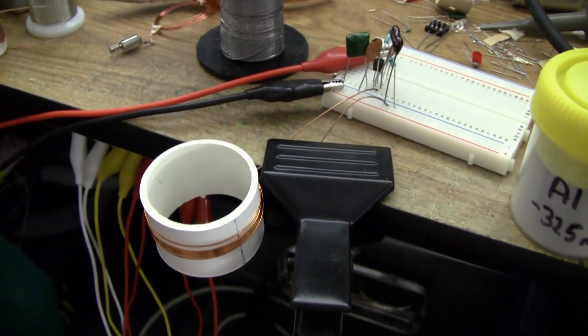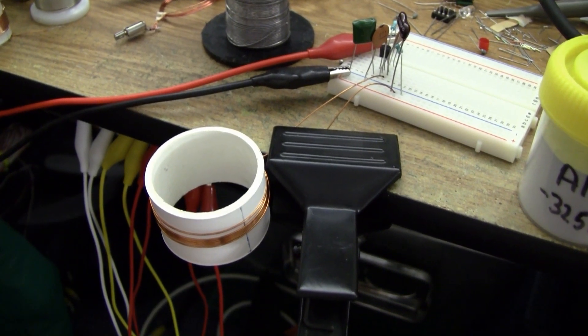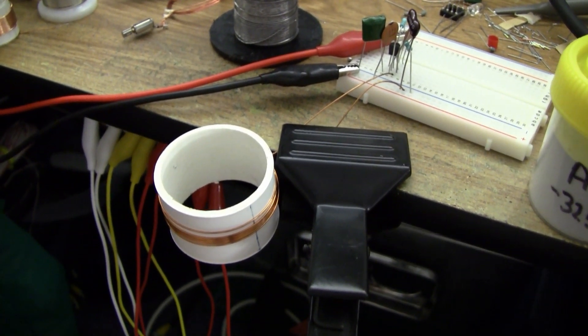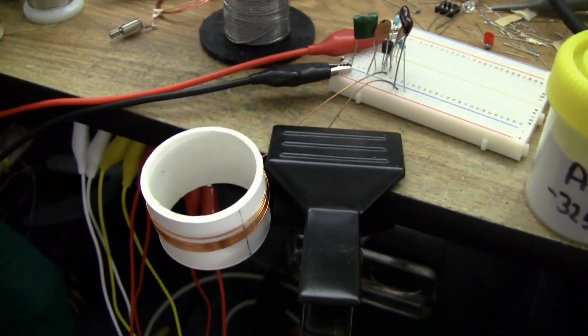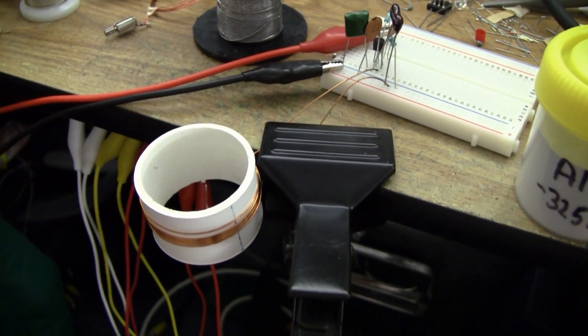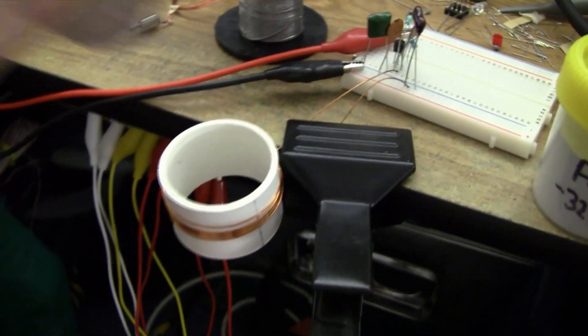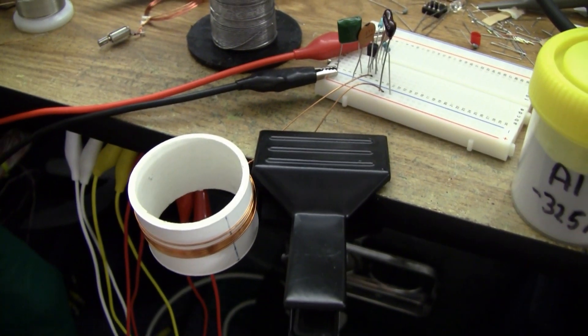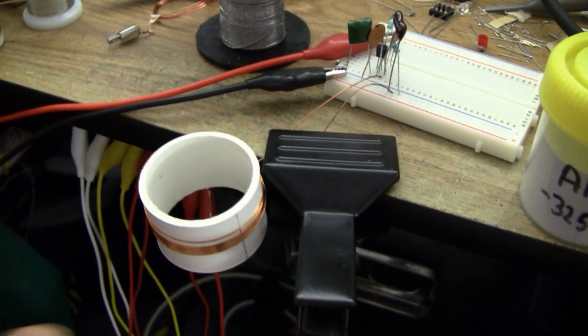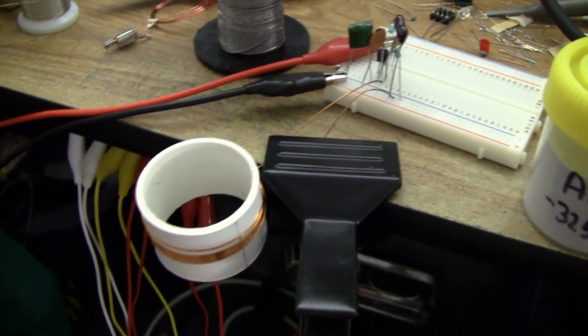I believe there are devices available commercially on the market that are essentially money boxes that use this principle to automatically add up the coins for you. And it wouldn't be terribly difficult to build such a device using an oscillator just like this and a microcontroller to characterise the response as the coins fall through the coils.